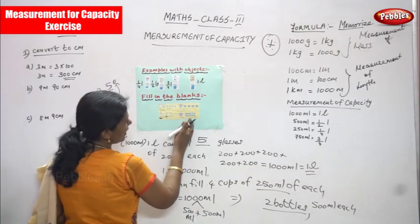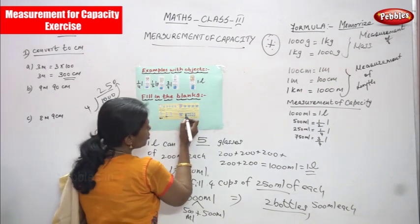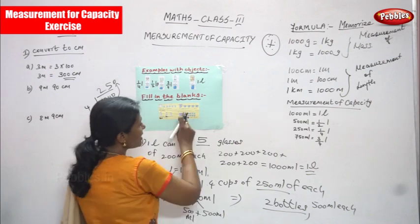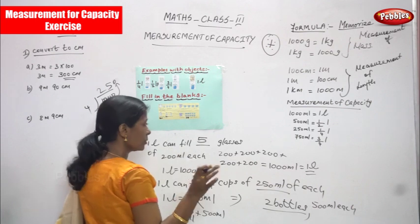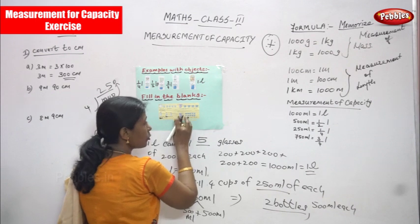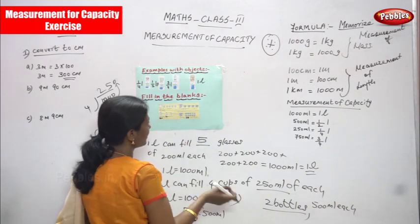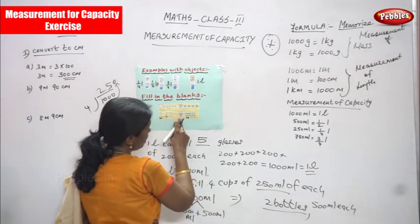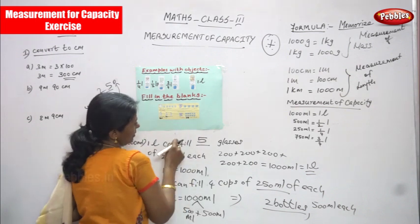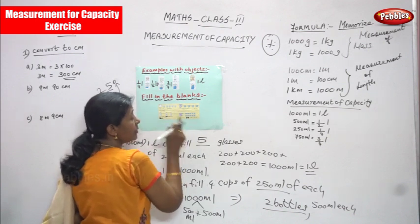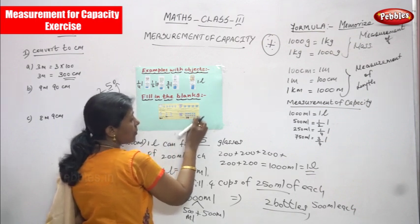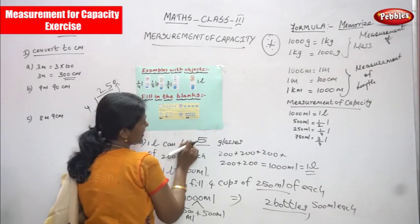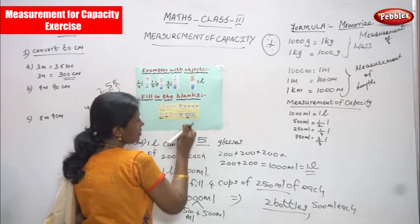This is: 1 liter can fill dash mugs of 100 ml. So how many mugs — just count: 1, 2, 3, 4, 5, 6, 7, 8, 9, 10. Answer is 10 mugs. Each mug contains 100 ml of coffee or tea or juice — whatever it may be, your favourite. This is a 1 liter can, fully filled with water or coffee or tea or milk — 1000 ml. Now we are going to split into 10 mugs. So each mug holds 100 ml — this is the question.